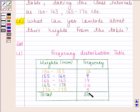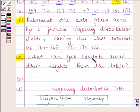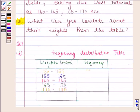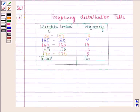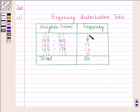Let's now move on to the second part. Now, second part says that what can you conclude about their heights from the table. Now, look at the table. Number of students who are shorter than 165 centimeters are 12 plus 9 plus 14, that is 35. So, this means more than 50 percent students are shorter than 165 centimeters.